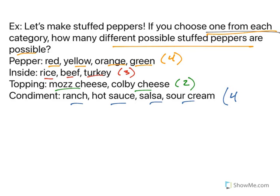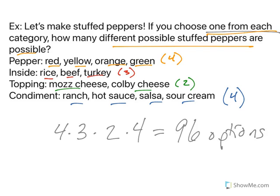Okay. So if I take four times three times two times four, that's 96. So we would have 96 options of different stuffed peppers, just using one from each of these categories. So thinking about if you would make this tree diagram, it would be huge, right? But this is the idea of the fundamental counting principle is that it gives you a nice quick way to figure out the total number of options. And then you can kind of go from there. But that's it for this video.